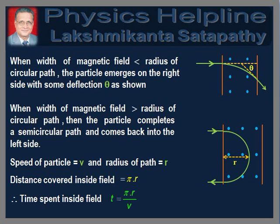When the width of the magnetic field is less than the radius of the circular path, the particle emerges on the right side with some deflection theta as shown in the first figure. When the width of the field is greater than the radius of the circular path, the particle completes a semicircular path and comes back into the left side as shown in the second figure. The distance covered by the particle inside the magnetic field is equal to πr. If the speed of the particle is v, then the time spent is t = πr / v.